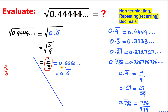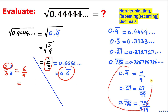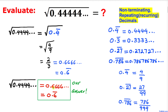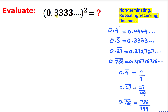Let me show you one more method. We can write this two-thirds in terms of 0.6 bar. If we multiply and divide by 3 at the same time, the top becomes 6 divided by 9. We know that 6 divided by 9, by this definition, can be written as 0.6 bar. So our answer is 0.666 going on and on, or simply 0.6 with a bar on top.